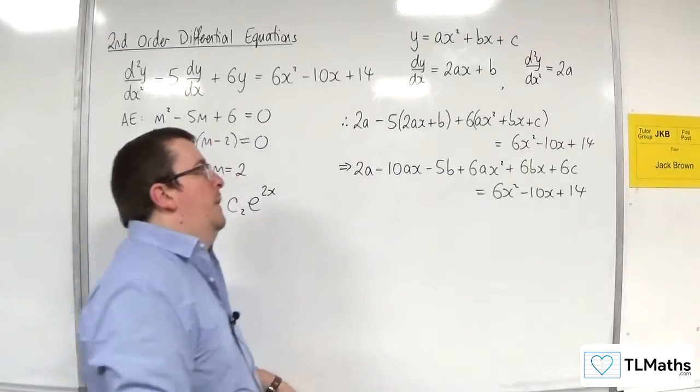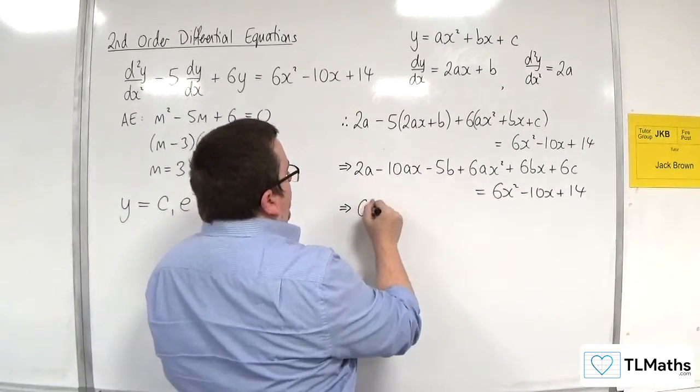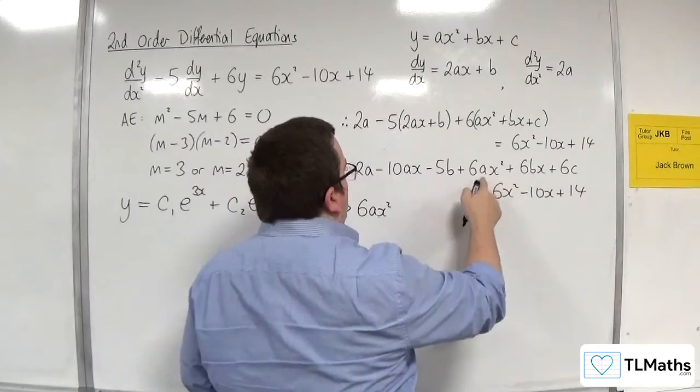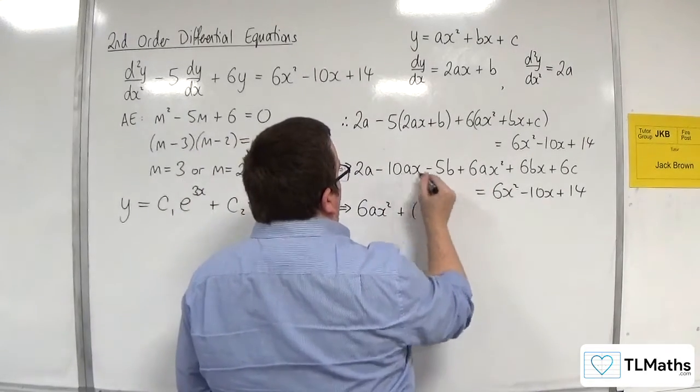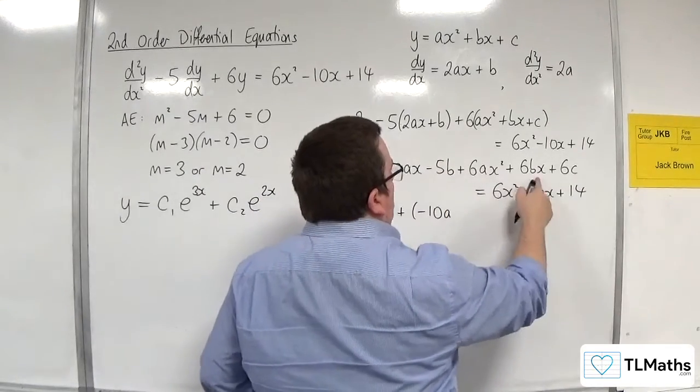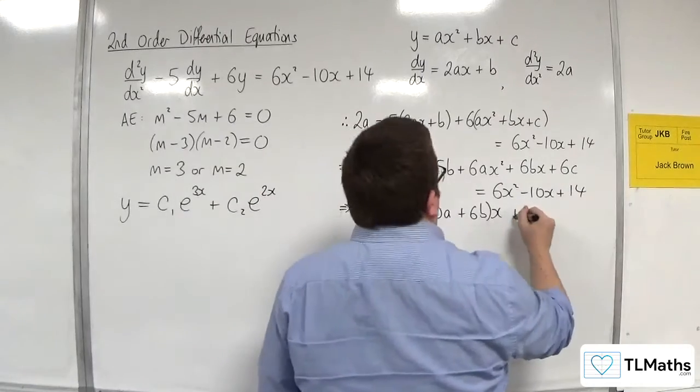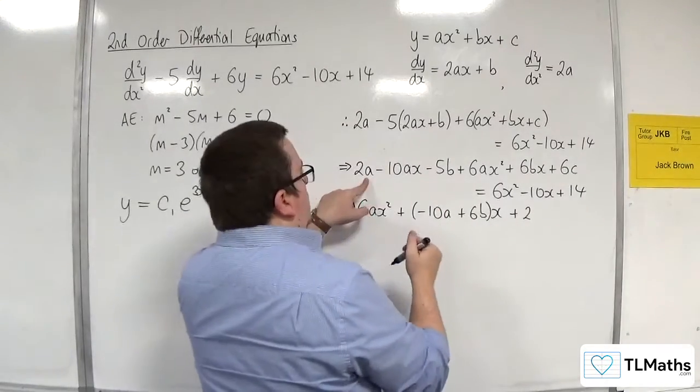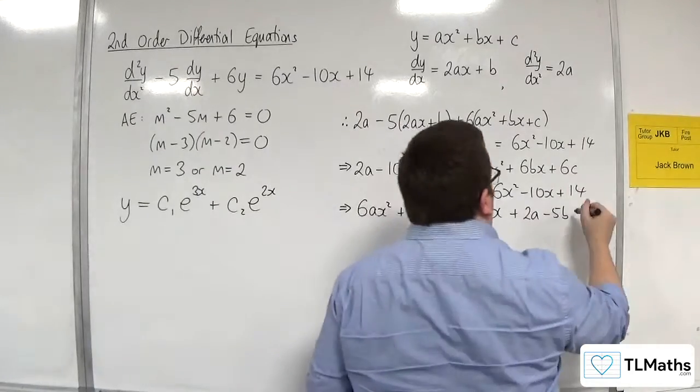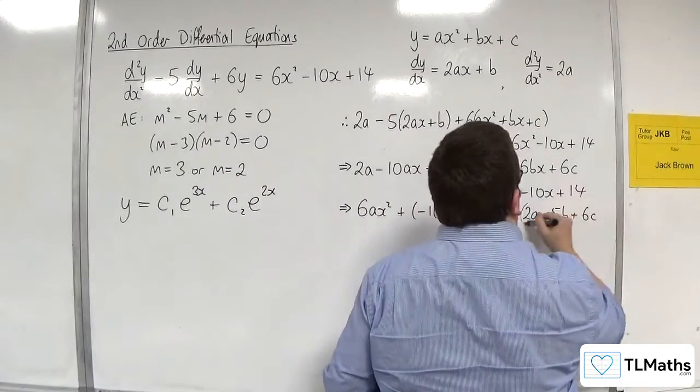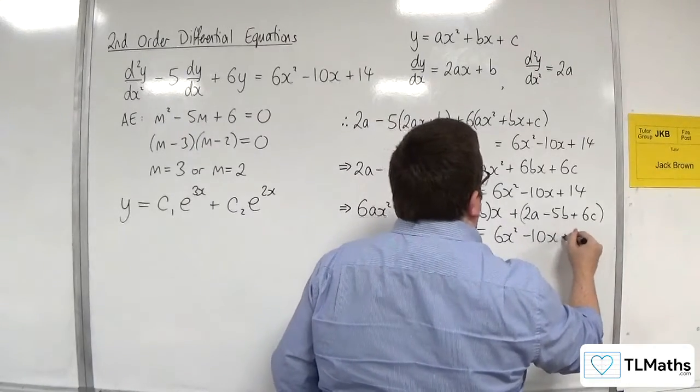Okay, so we've got 6ax squared. Now, for the x terms, we have minus 10a and 6b lots of x. And then we've got 2a, take away 5b, and plus 6c. And that's got to be equal to 6x squared, take away 10x plus 14.